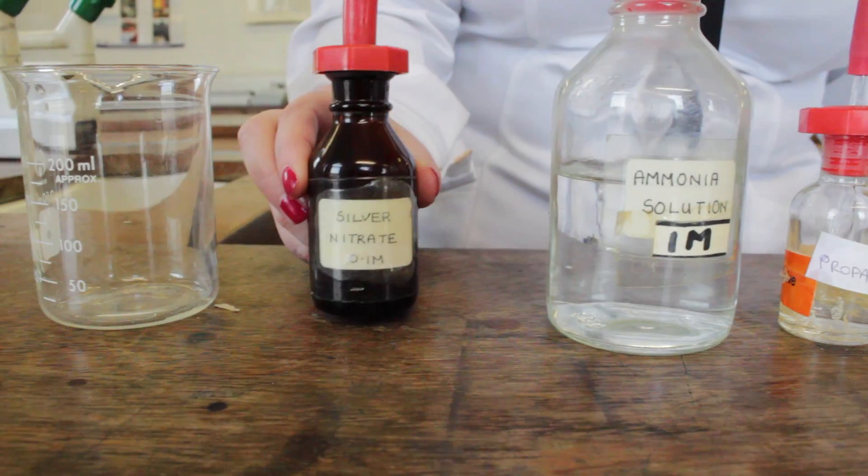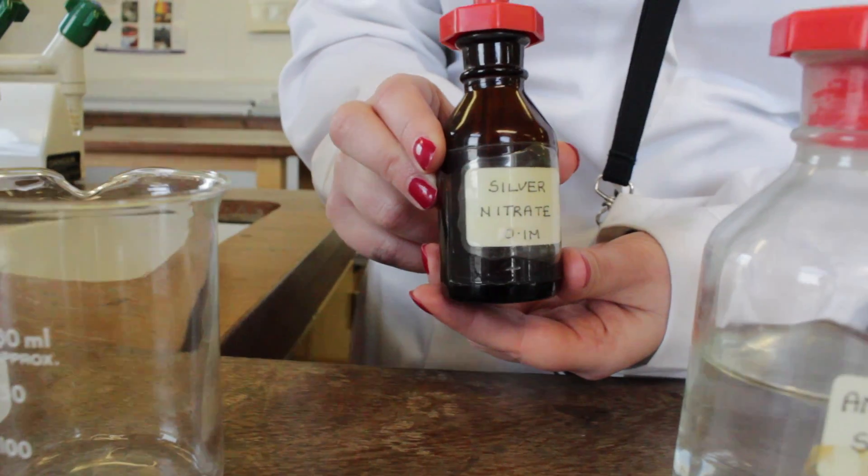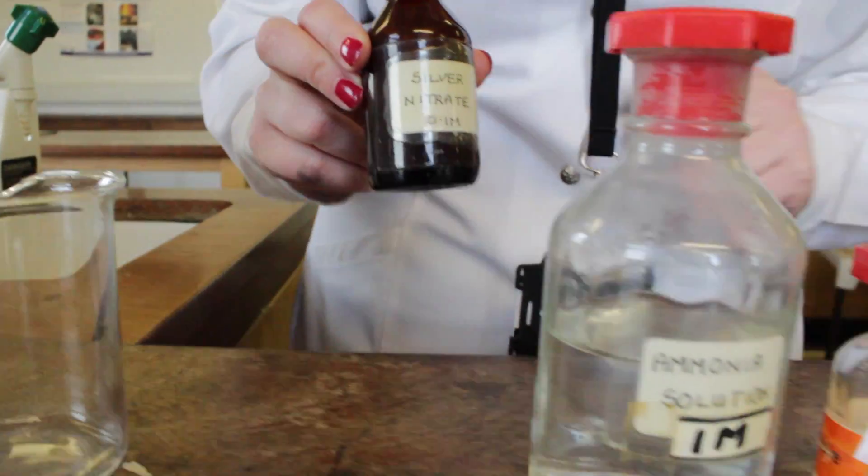We start by adding about 2 cm³ of silver nitrate solution to our test tube.